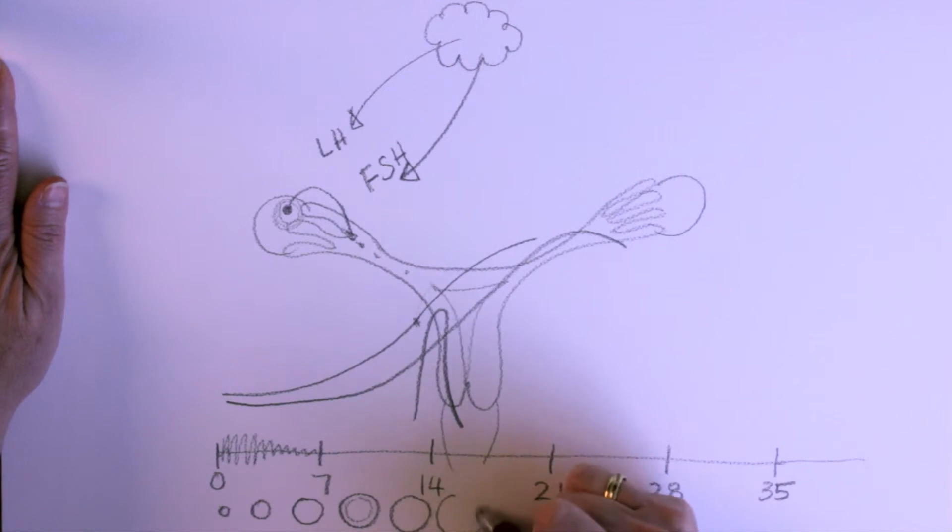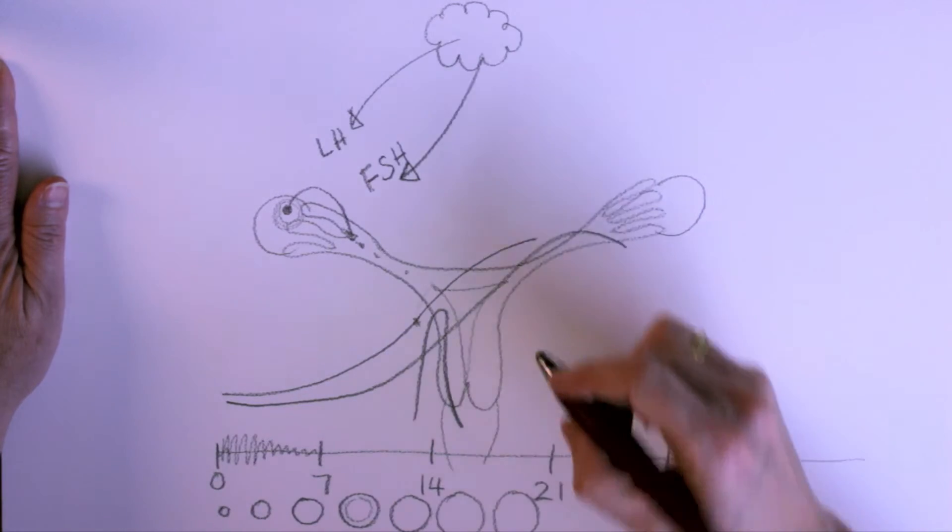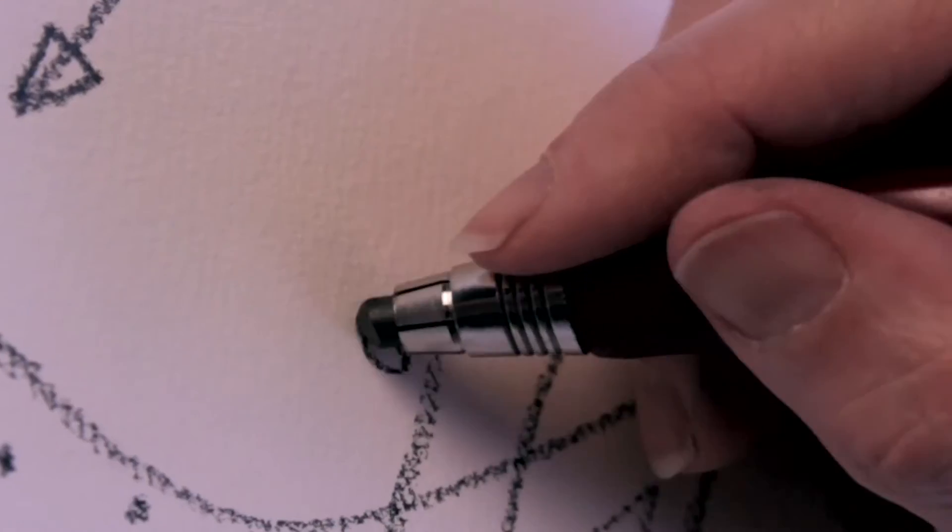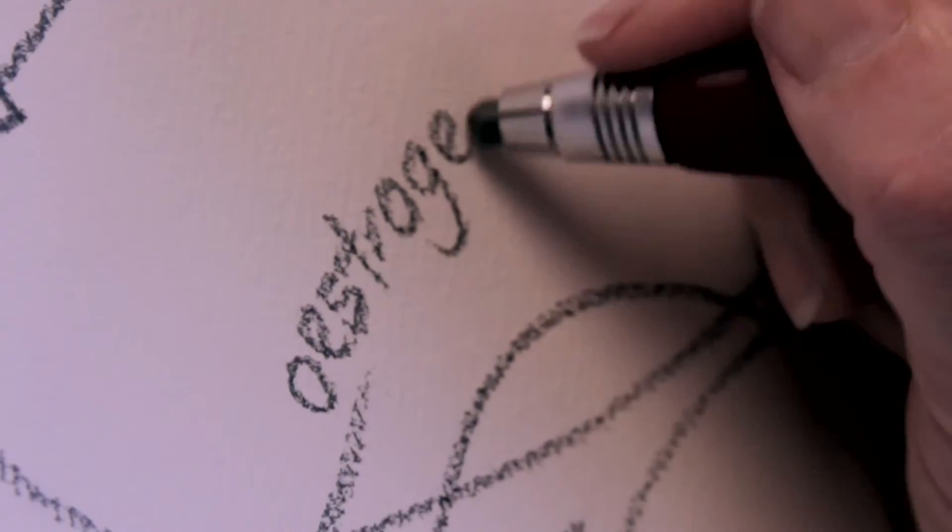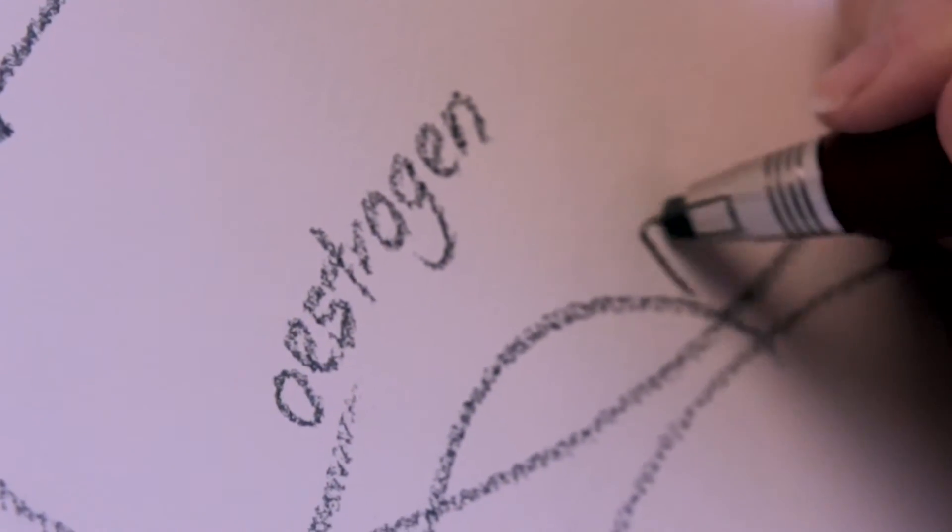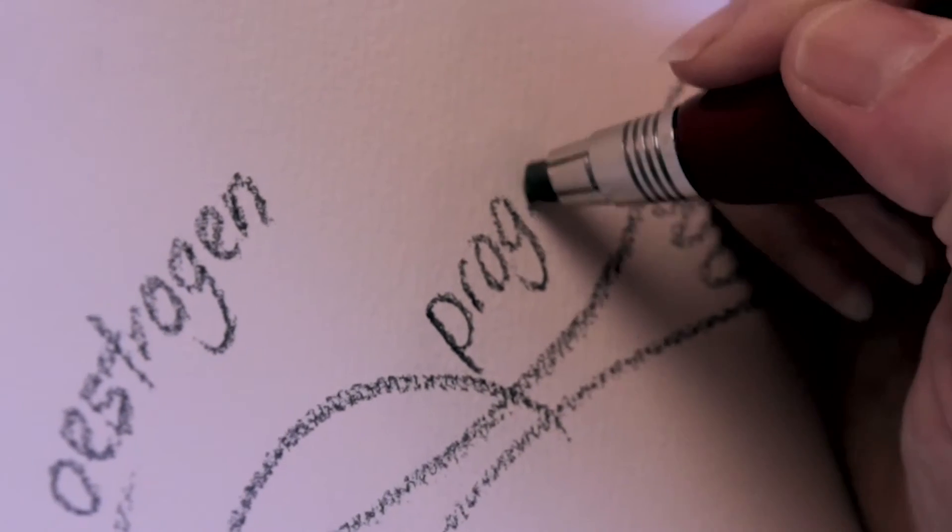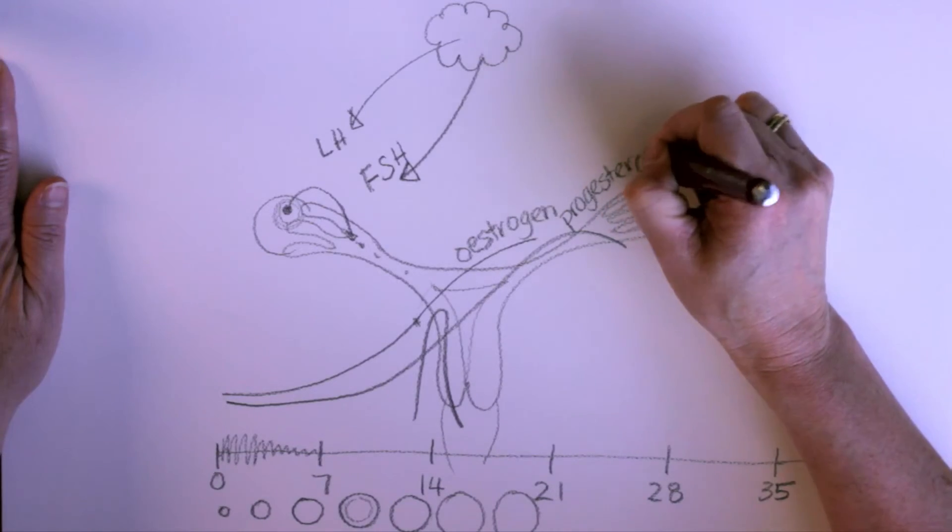This follicle continues to get bigger and it's producing the progesterone. So, let's write these down. You've got estrogen that starts off and gets more and more, and then as soon as the egg pops out, you get the progesterone.